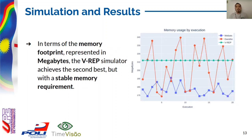In terms of memory footprint, represented in megabytes, VREP achieved the second best with an average of 220 megabytes, with a stable memory requirement. Different observations can be made for Webots and Gazebo. Nevertheless, Webots achieved less variation in memory with an average of 176 megabytes between each execution, and Gazebo presented an average of 203 megabytes.